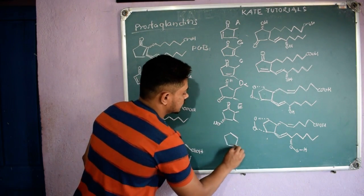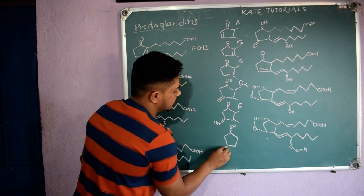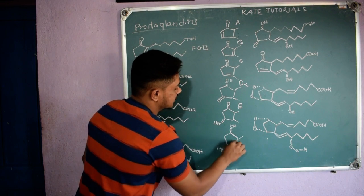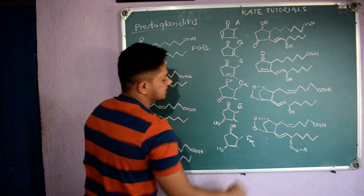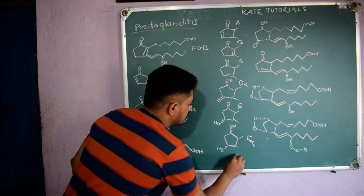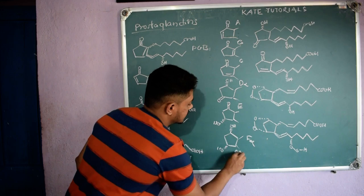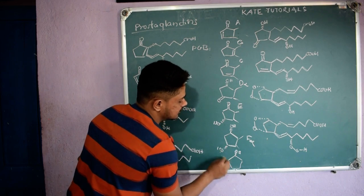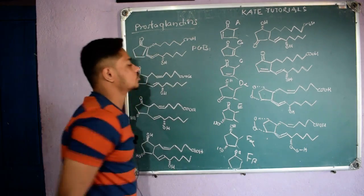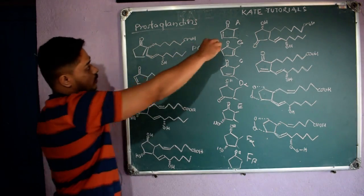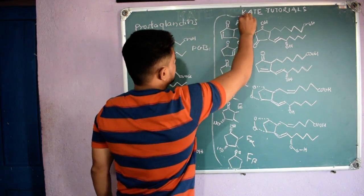For type F: below the plane with H present — this is PGF alpha, since the OH is below the plane. If I write the OH above the plane, with other things remaining the same, then it is PGF beta. Now you should do the nomenclature for all these structures using what we have discussed.